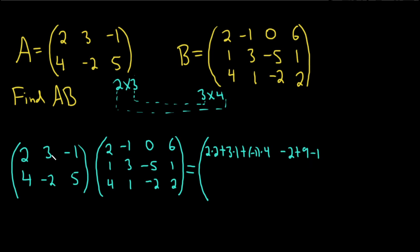Now the first row, third column. We use the first row of A and the third column of B — essentially taking the dot product of those two vectors. So: 2 times 0, plus 3 times negative 5, plus negative 1 times negative 2. That gives 0, negative 15, and positive 2.